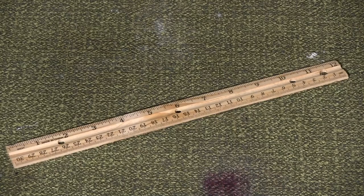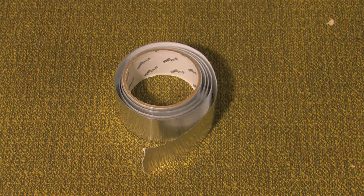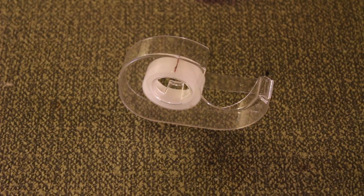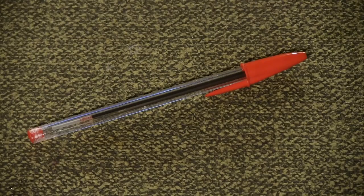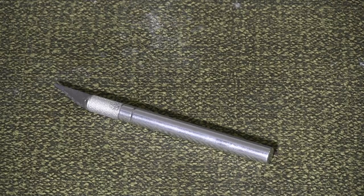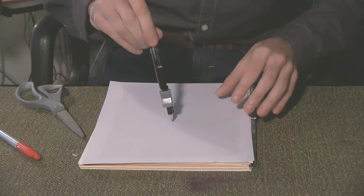Materials for this prop include cardboard, cardstock, a ruler, a compass, aluminum tape, double stick tape, black acrylic paint, a red pen, scissors, an exacto blade, and a pen or pencil.